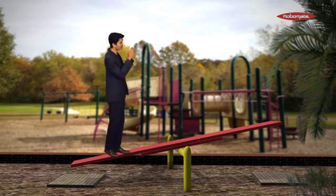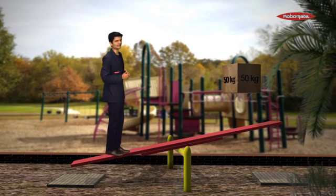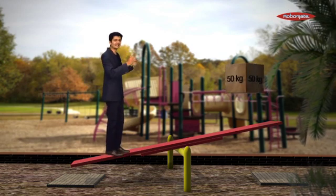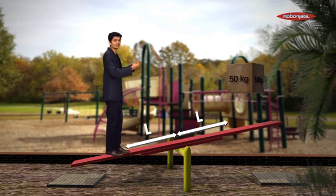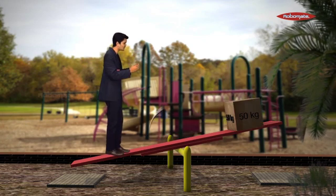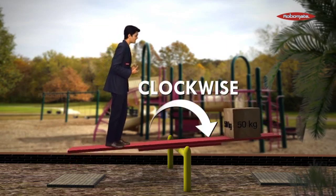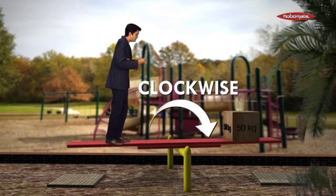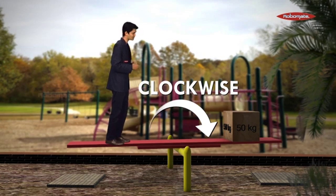But say for example, I have a box of the same weight as I am and I place that box at exactly the same distance from the pivot point as me. As soon as I do that, the box causes the seesaw to tilt in the clockwise direction and now the seesaw balances itself in the horizontal position.